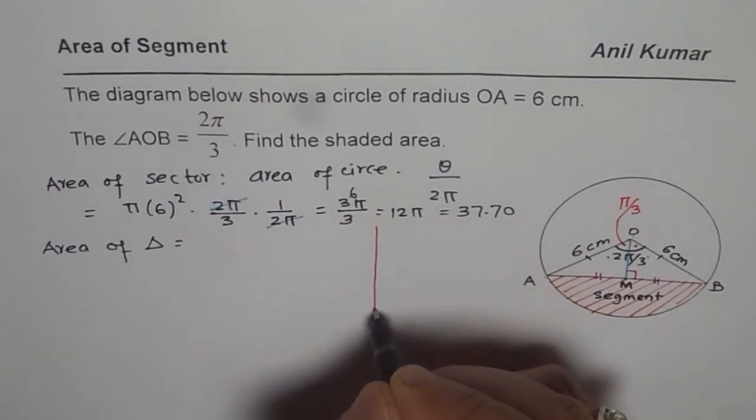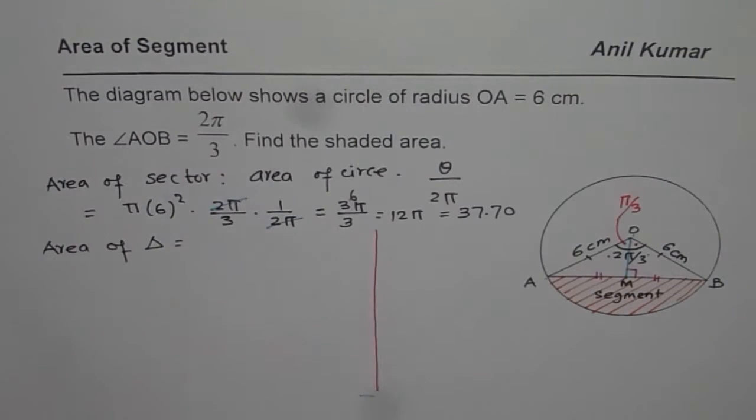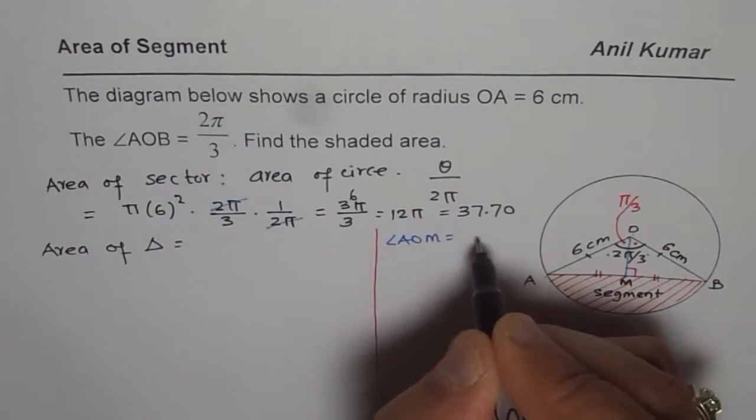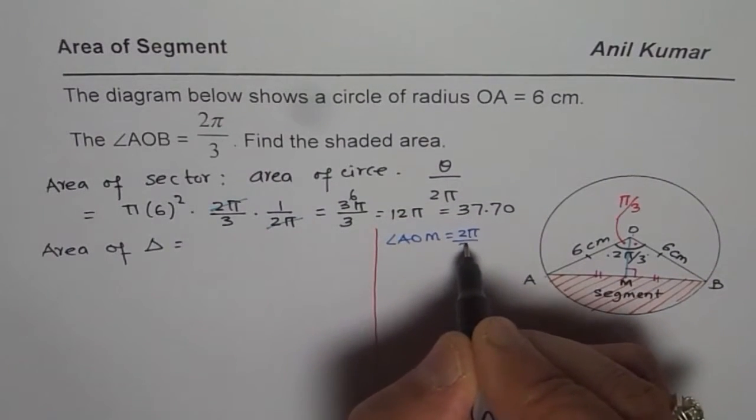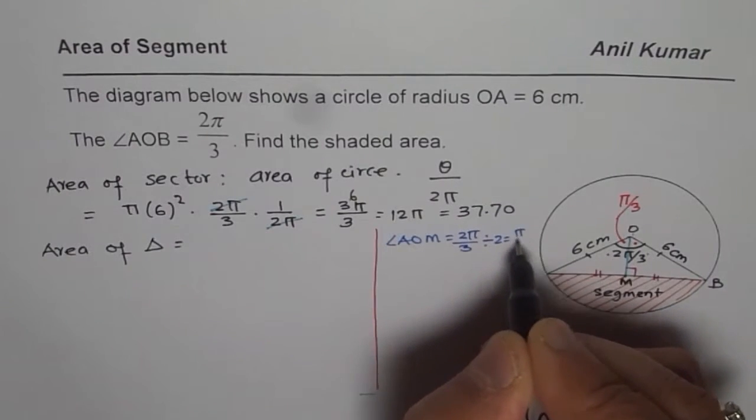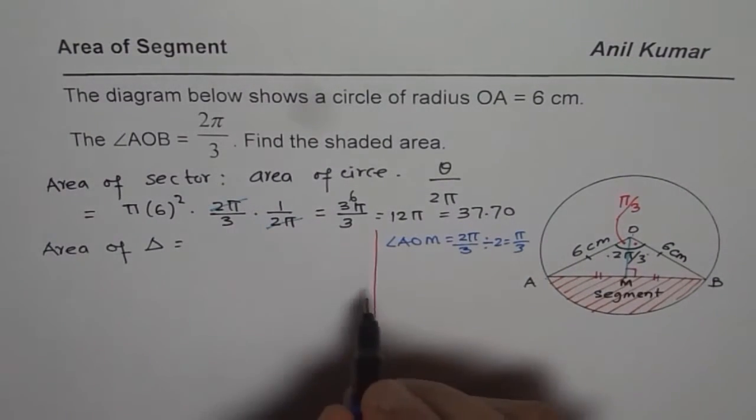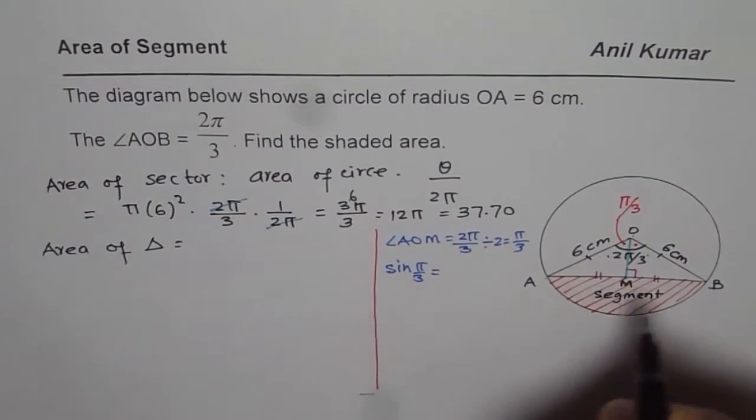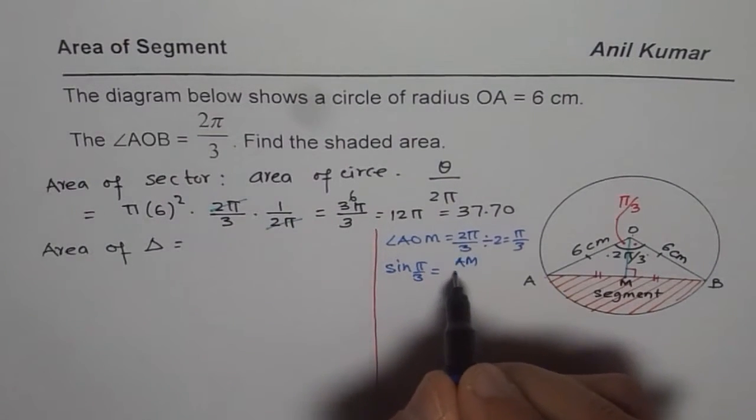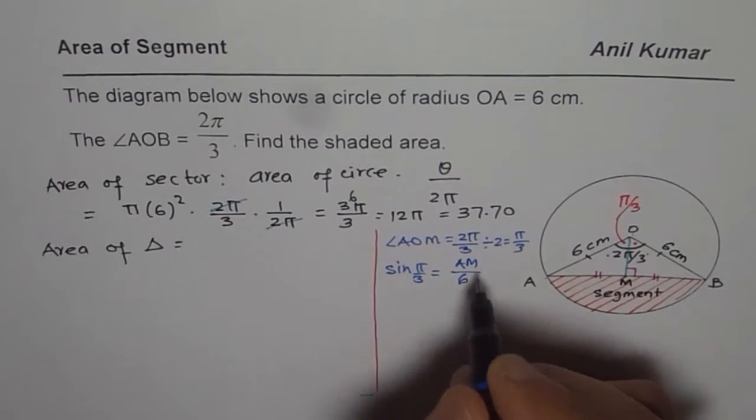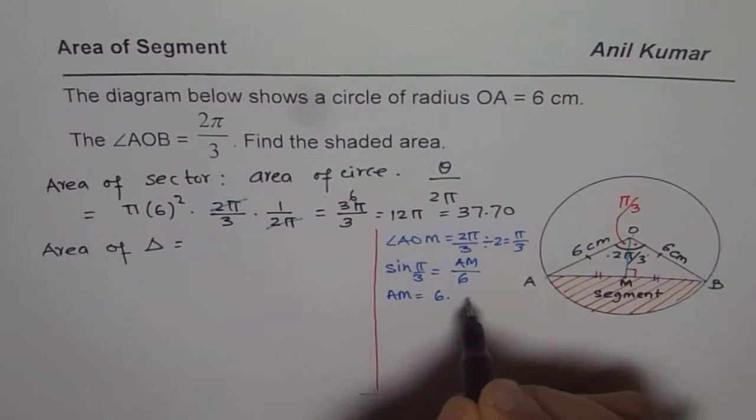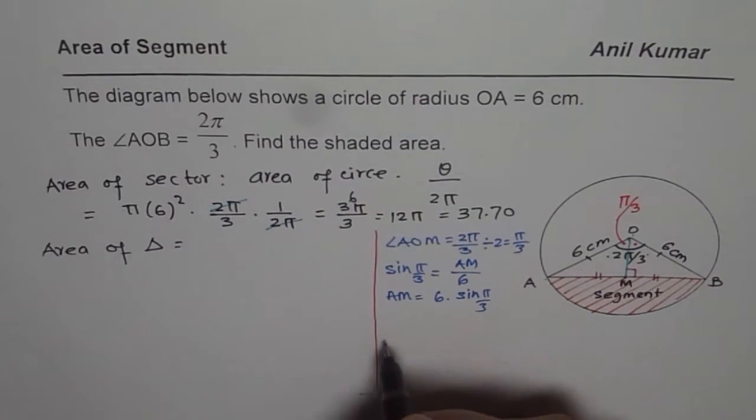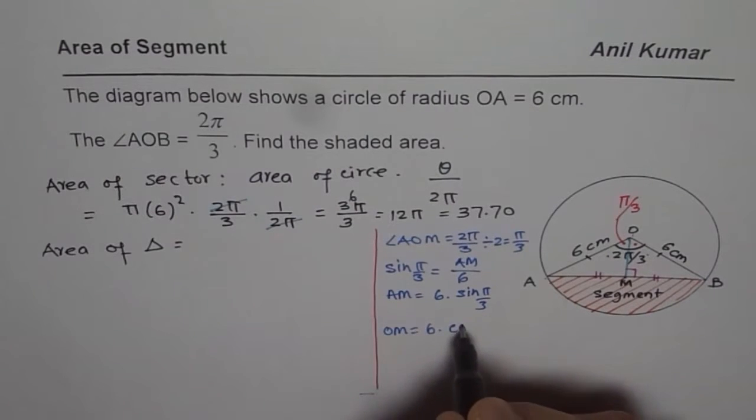So what we know here is angle AOM is equal to π by 3. I should write 2π by 3 divided by 2 which is π by 3. So we know that sine of π by 3 should be equal to opposite side is AM divided by hypotenuse of 6. So that gives us AM equals to 6 times sine π by 3. Similarly we can find what OM is. OM is 6 times cos π by 3.